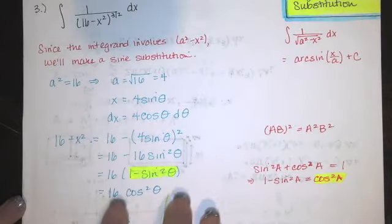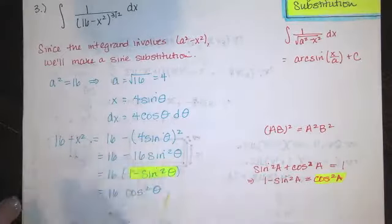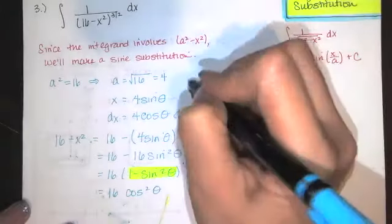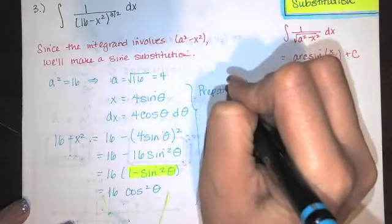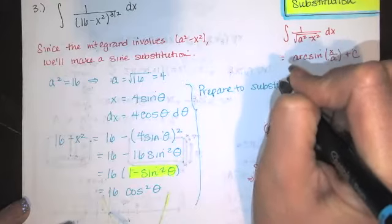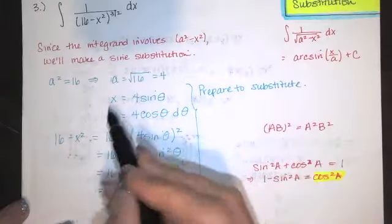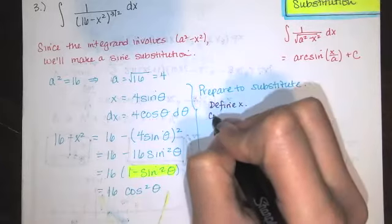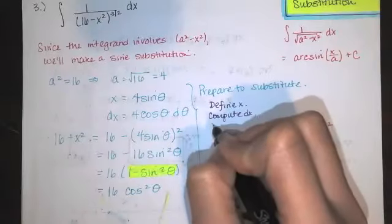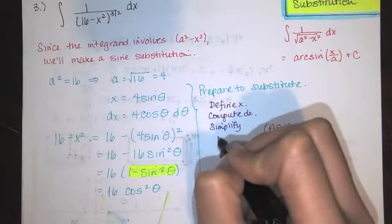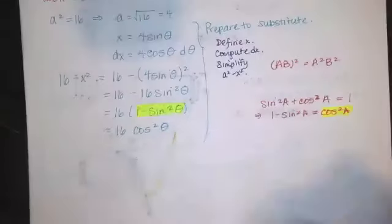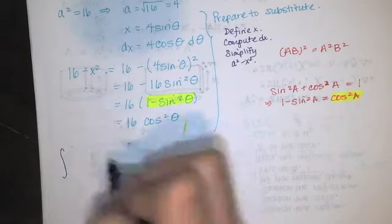I would recommend substituting from the simplified expression. This is the prepare-to-substitute step: define x, compute dx, and simplify the a squared minus x squared. Now we go back to our integral and write everything entirely in terms of theta. We replace 16 minus x squared with 16 cosine squared theta, and replace dx with 4 cosine of theta d theta.